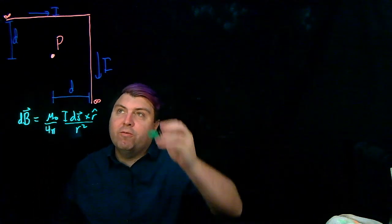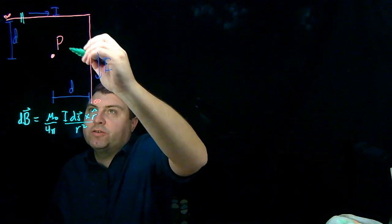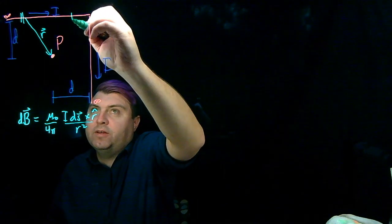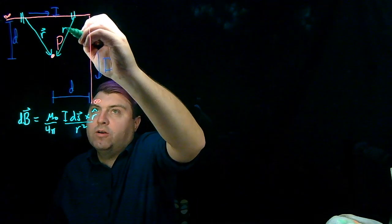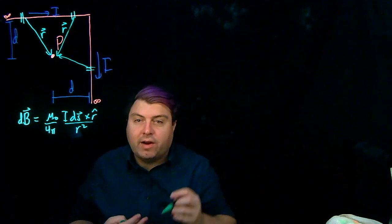So the pieces that we want, since this is a one-dimensional shape, is we want zero-dimensional little slices. And then we are going to draw an r vector from these to our point P. And then we also need to consider this.